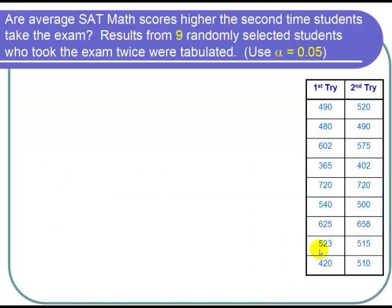Here are the results. We have nine students who each had a first attempt and a second attempt. This student went from 490 and improved to 520. You can look through and see most improved, but some didn't.